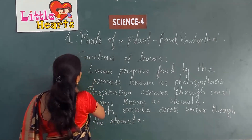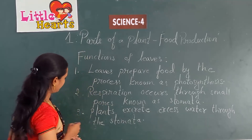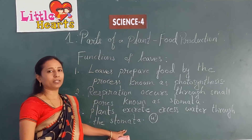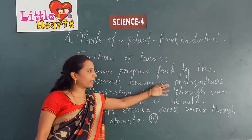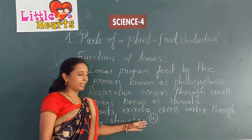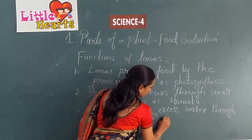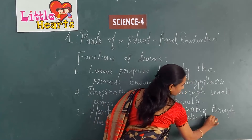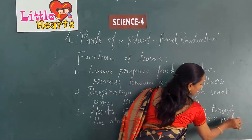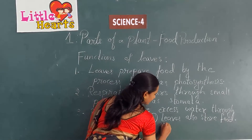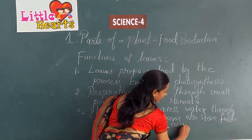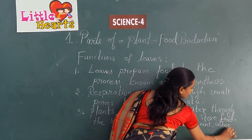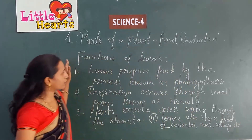One more function of leaves: not all, but some leaves store food. The food prepared by photosynthesis is stored in the leaves. Examples of leaves that store food are coriander, mint, cabbage, and so on. These are the functions of leaves.